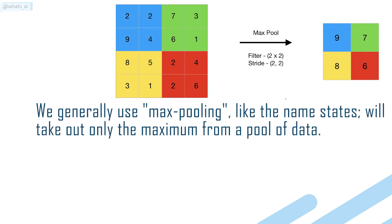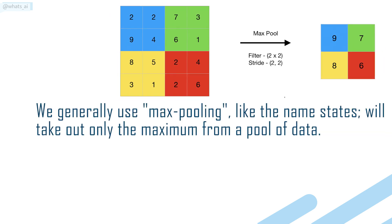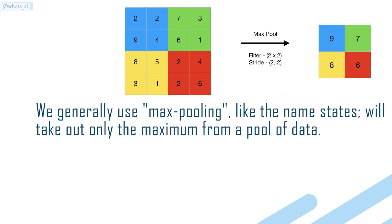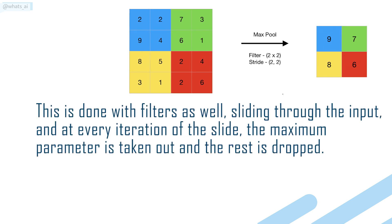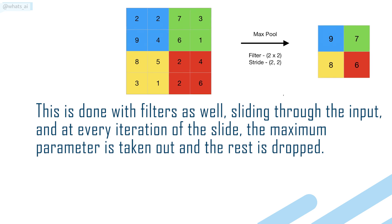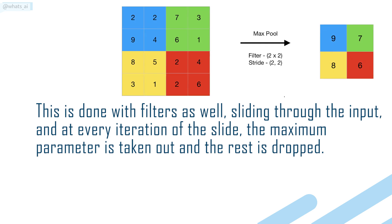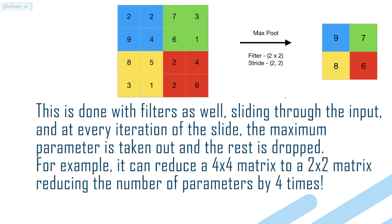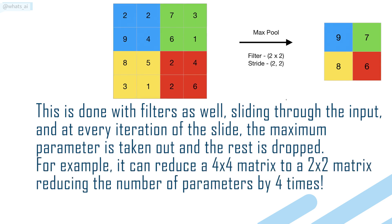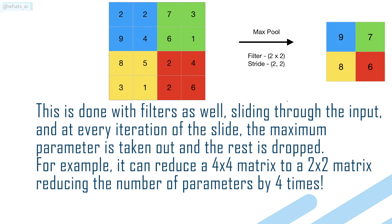We generally use max pooling. Like the name states, we'll take out only the maximum from a pool of data. This is done with filters as well, sliding through the input and at every iteration of the slide, the maximum parameter is taken out and the rest is dropped. For example, it can reduce a 4x4 matrix to a 2x2 matrix, reducing the number of parameters by 4 times.